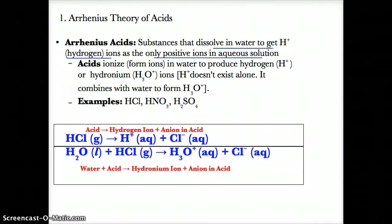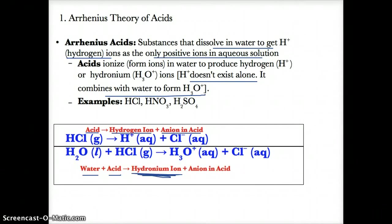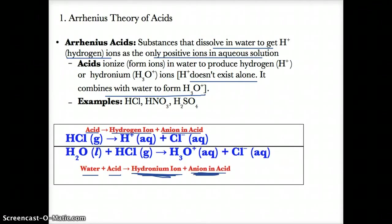In reality, acids usually combine with water to get H3O+. They can break apart or ionize in water to form H+ and a negative ion, or the acid can react with water to produce the hydronium ion H3O+ along with the anion of the original acid. That's the Arrhenius theory of acids.